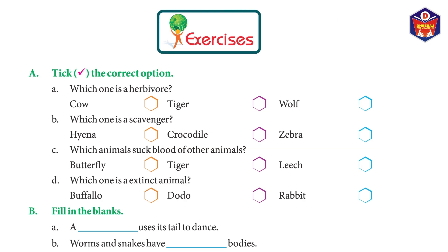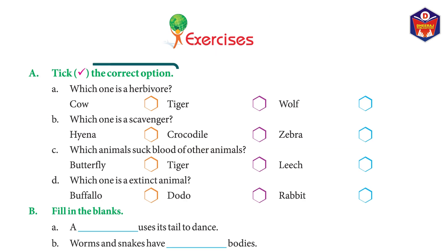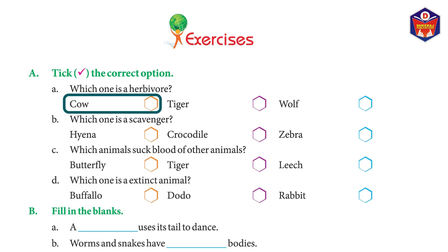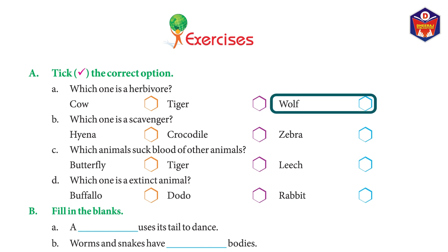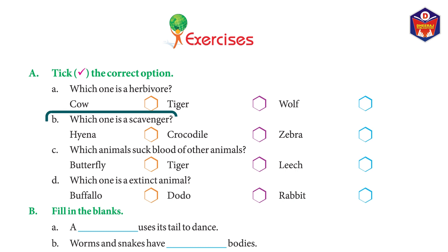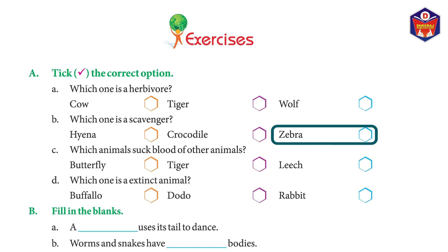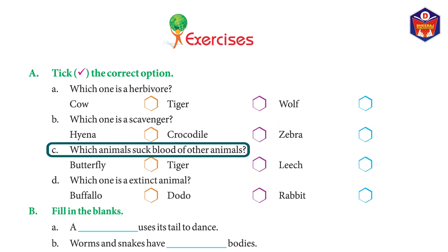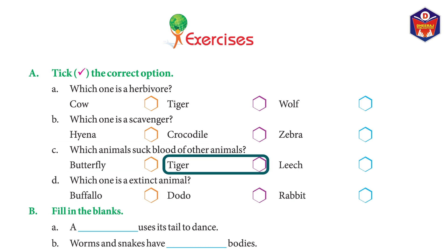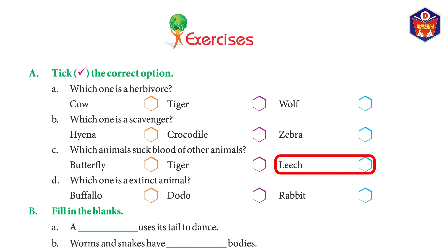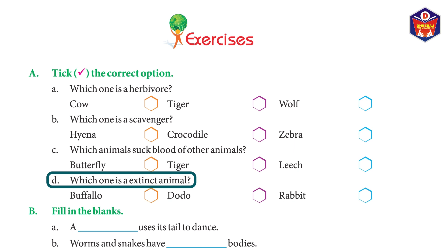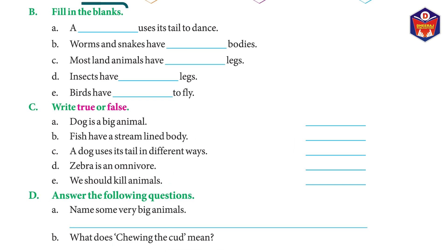Exercises — choose the correct option: (a) Which one is a herbivore? Cow, tiger, wolf — Answer: cow. (b) Which one is a scavenger? Hyena, crocodile, zebra — Answer: hyena. (c) Which animal sucks blood of other animals? Butterfly, tiger, leech — Answer: leech. (d) Which one is an extinct animal? Buffalo, dodo, rabbit — Answer: dodo.